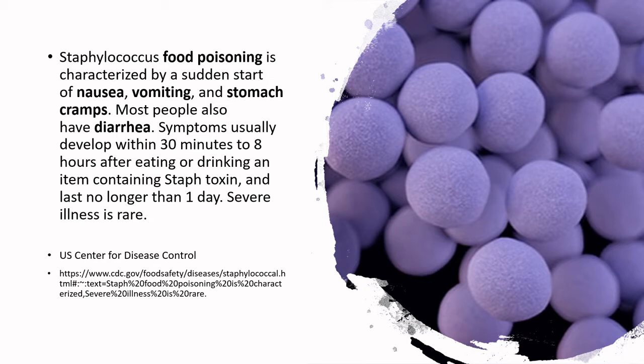Staphylococcus food poisoning is caused by a toxin — not the bacteria infecting you directly, but an exometabolite the bacteria produce while metabolizing the protein in the meat. That toxin can cause nausea, vomiting, and stomach cramps, and sometimes diarrhea. Because it's a toxin, onset can be quite quick — symptoms can develop within 30 minutes and up to eight hours after eating the product.